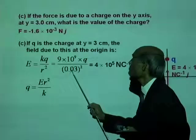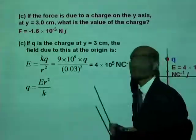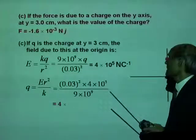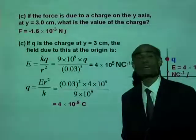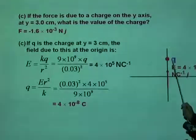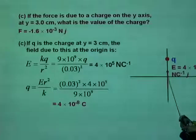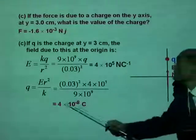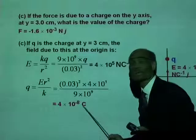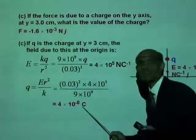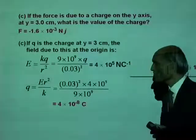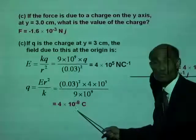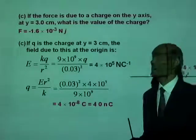R squared is 0.03 squared and k we know. So that will be r squared times E divided by k, and that will be 4×10⁻⁸ coulombs. So the electric field of 4×10⁵ Newton per coulomb at the origin was actually produced by a charge of Q equal to 4×10⁻⁸ coulombs. That equals 40 nanocoulombs.